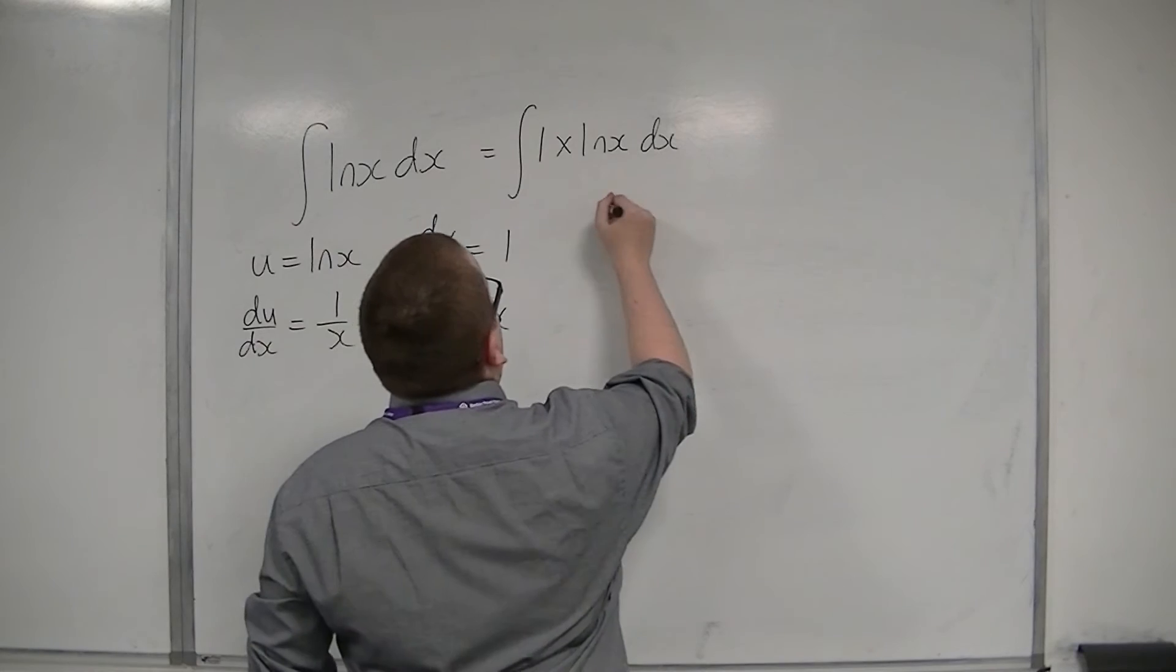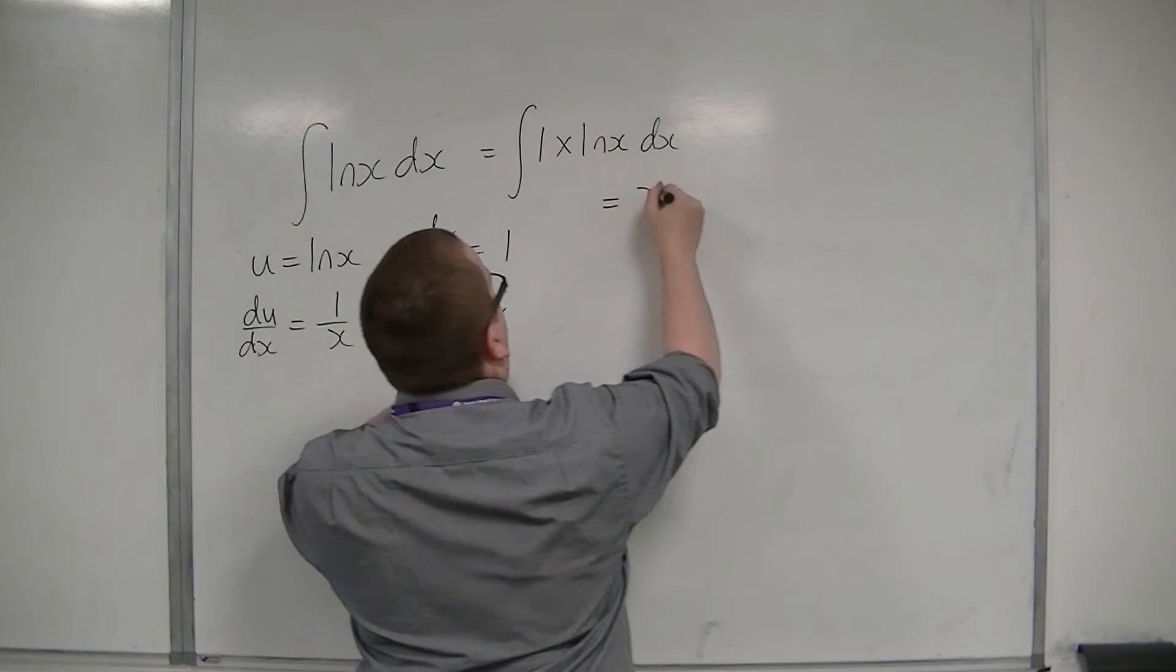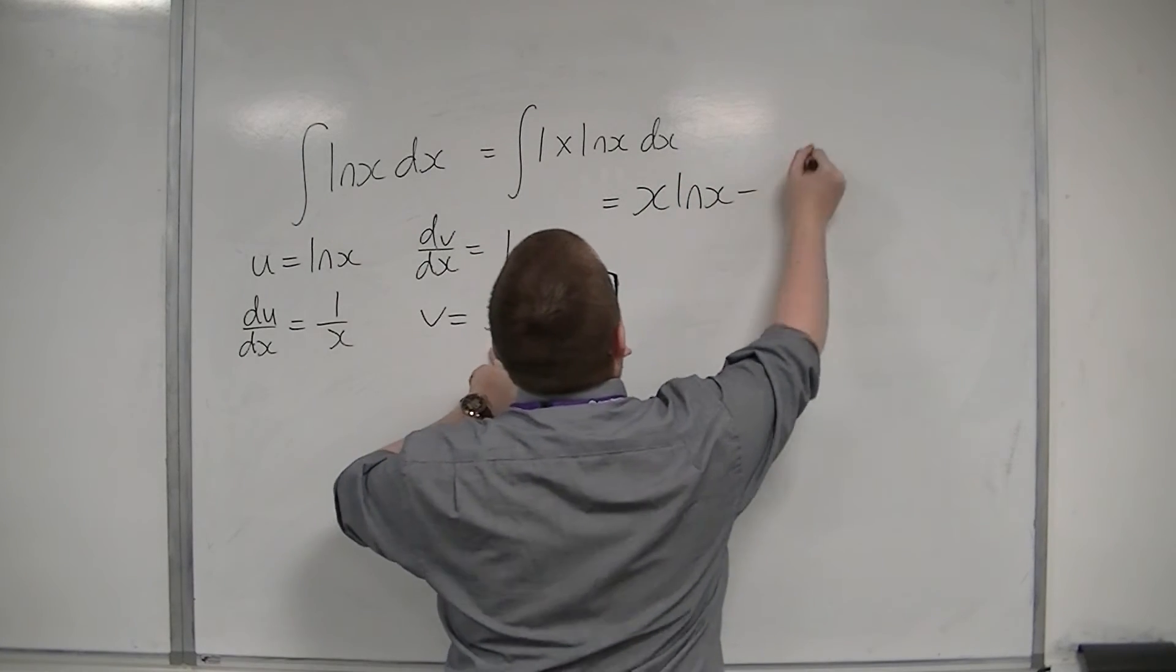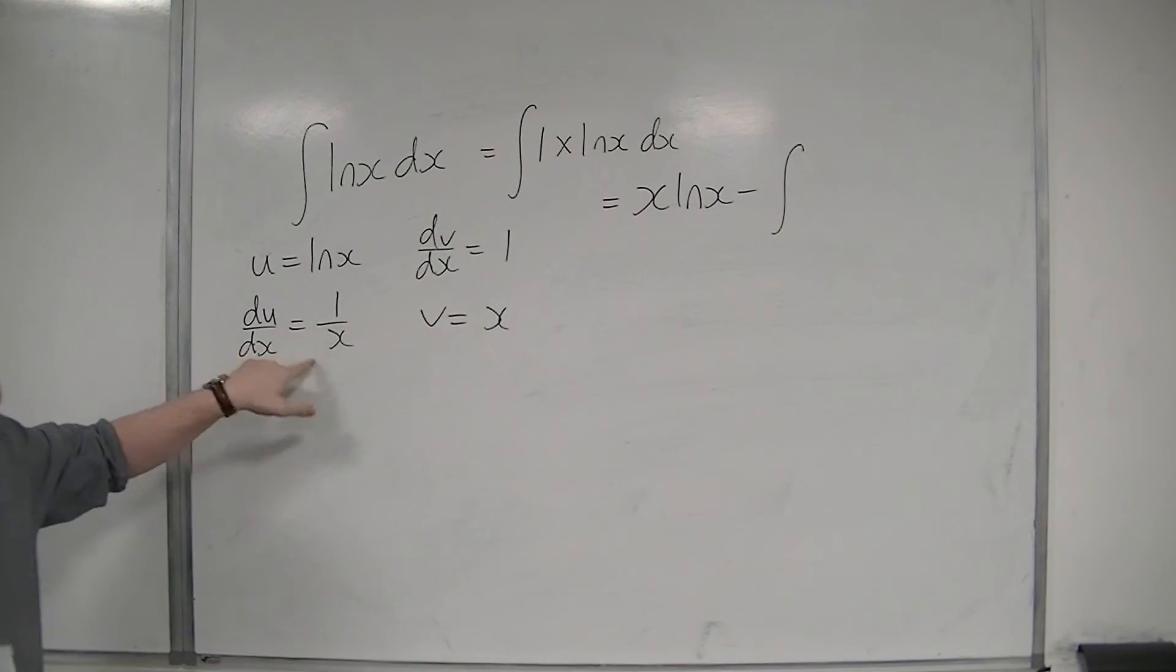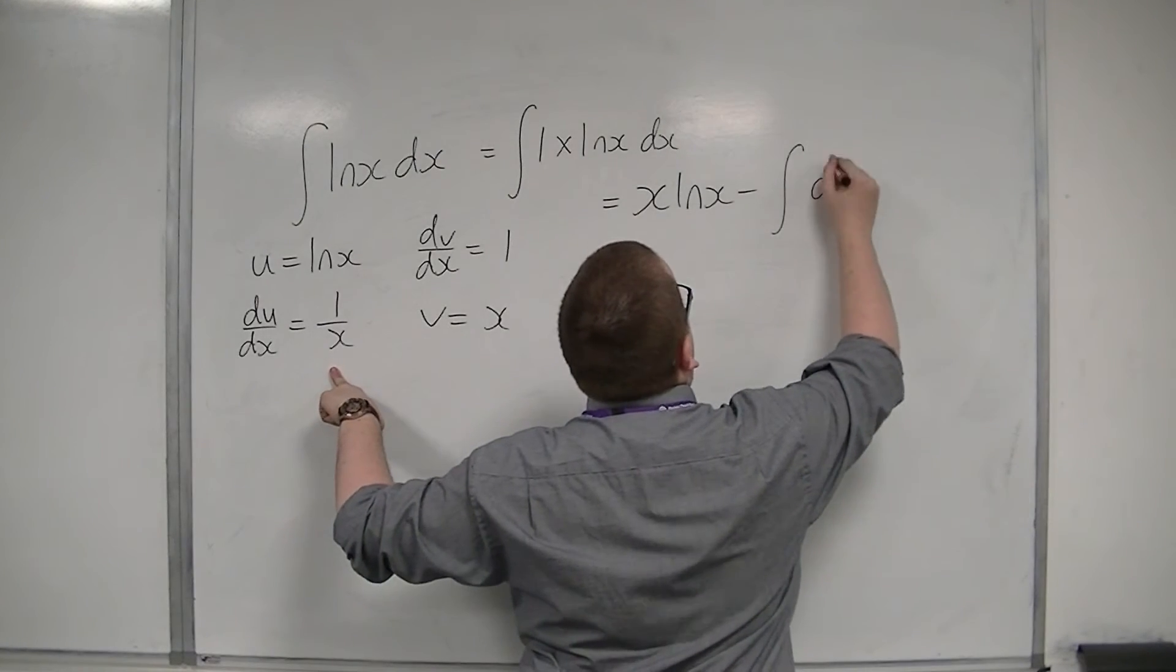So the integral of 1 times log x is u times v, so x log x, take away the integral of v du/dx. So x times 1 over x is just 1, so this is the integral of just 1, dx.